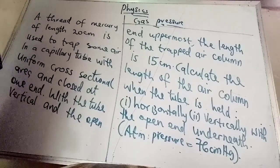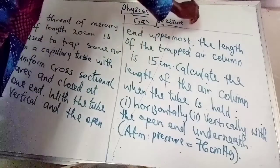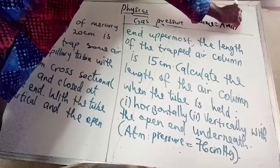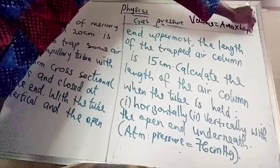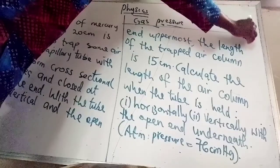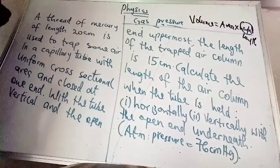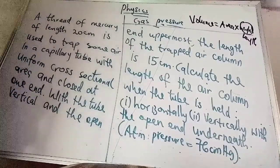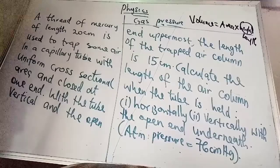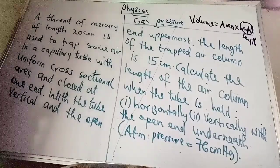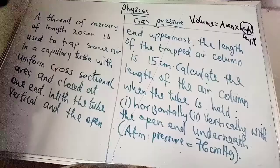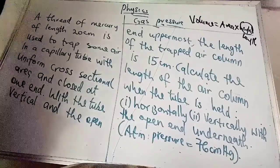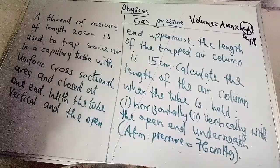It is also important to know that volume equals area times height or length, whichever the case may be. The volume of a gas can be calculated using area times length, or area times height — that is, the cross-sectional area multiplied by the column length of that gas.